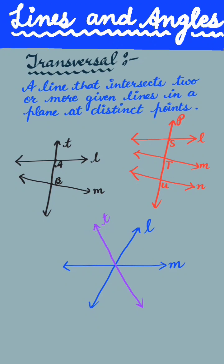Now on figure third, T is not a transversal to lines L and M because T does not intersect L and M at two distinct points. So transversal is a line that intersects two or more given lines in a plane at distinct points.